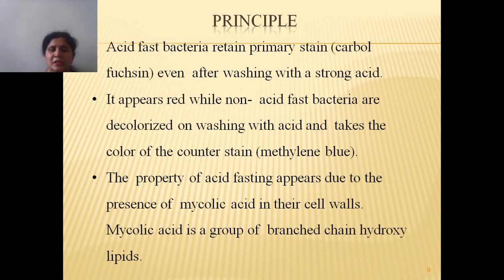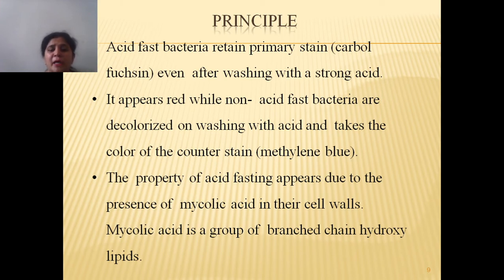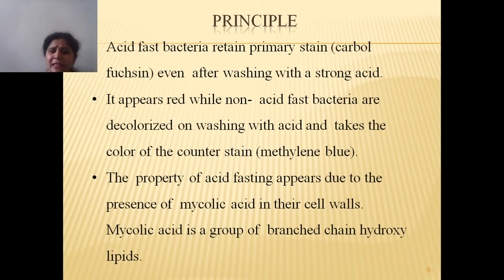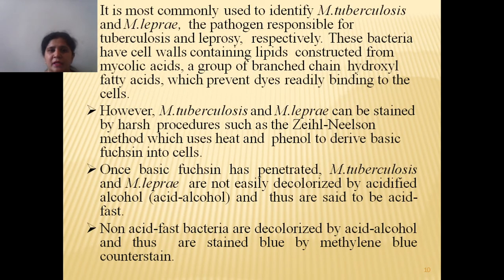Let's see the principle. Just as the difference in gram staining is based on cell wall composition, in acid-fast bacteria the differentiation between acid-fast and non-acid-fast bacteria is based on the presence of mycolic acid in their cell wall. Mycolic acid is a group of branched-chain hydroxy lipids. Acid-fast bacteria retain the primary stain carbol fuchsin and therefore appear red in color, while non-acid-fast bacteria, due to the absence of mycolic acid, are easily decolorized on washing with acid and take up the counter stain methylene blue.